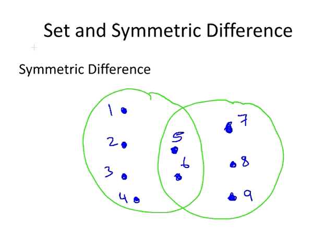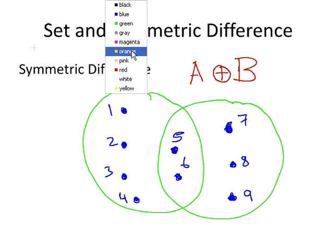Now let's look at the symmetric difference of A and B, and we would write that as follows: A circle plus B. And what area of the Venn diagram corresponds to that?